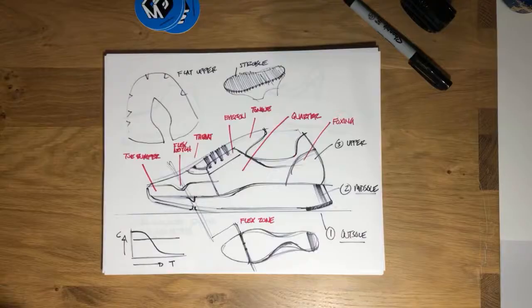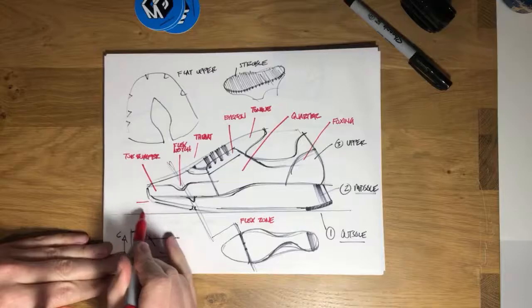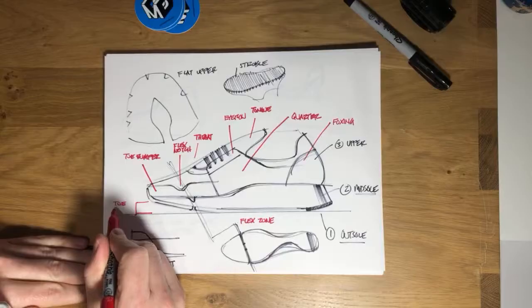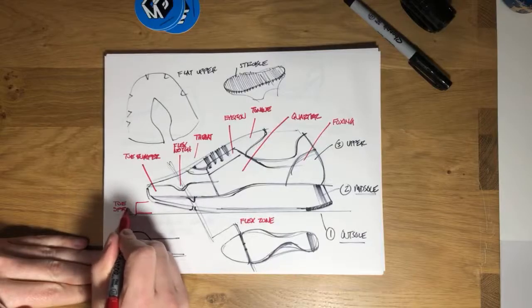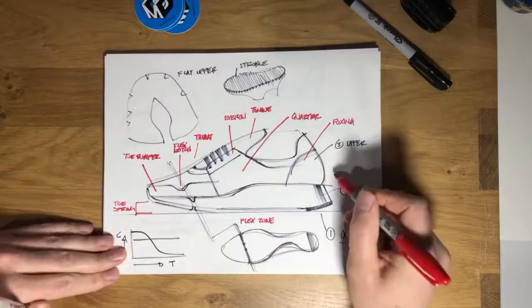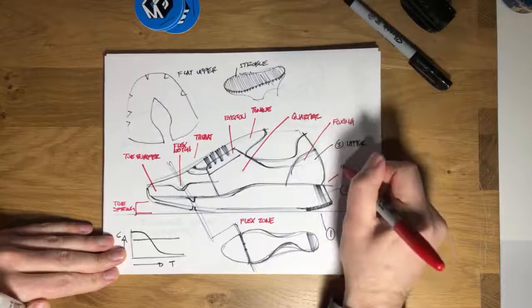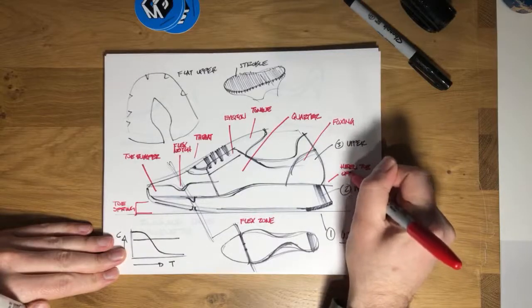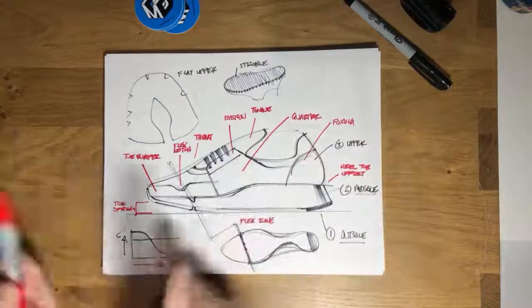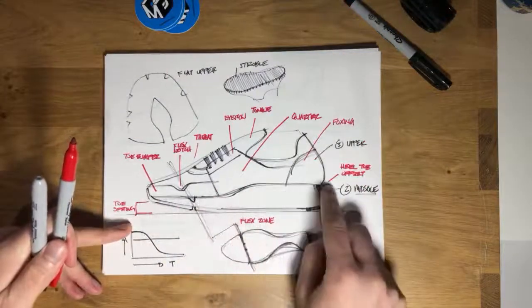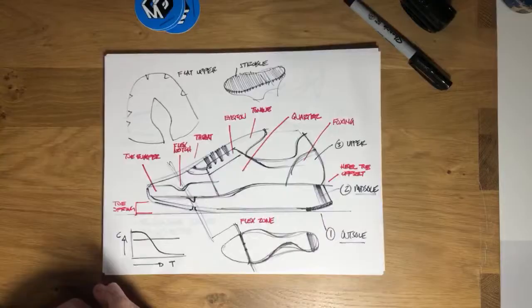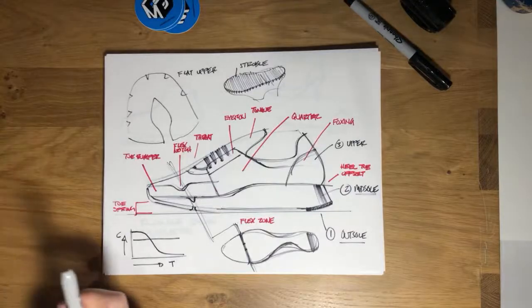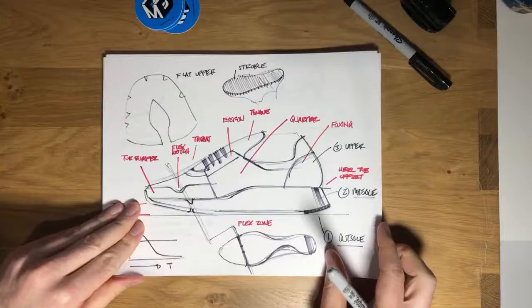We already talked about two important things when we looked at the last: toe spring and heel-toe offset. If you look at the side of a sneaker, you can usually see that offset — you can see where the midsole gets thicker to accommodate for it. Alright, so now we've got some basic terminology down.